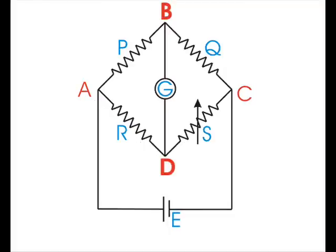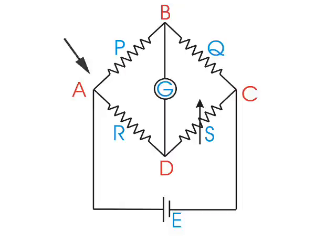As we said earlier, the points B and D are at the same potential. That is, the voltage drop from point A to point B is equal to the voltage drop from point A to point D.